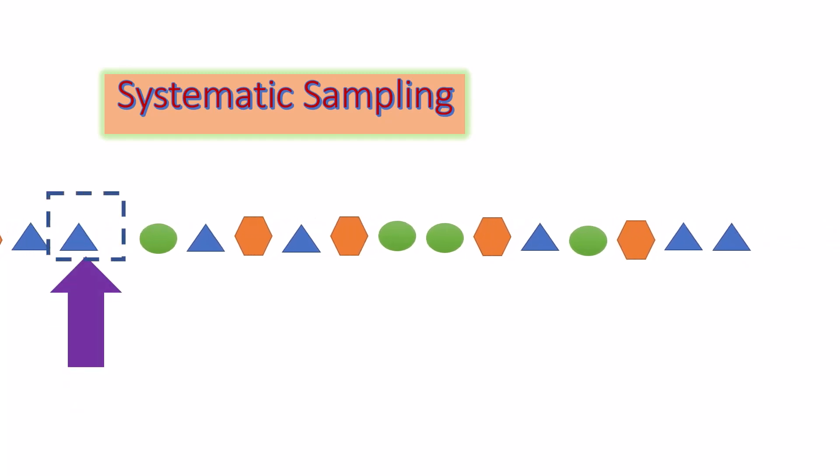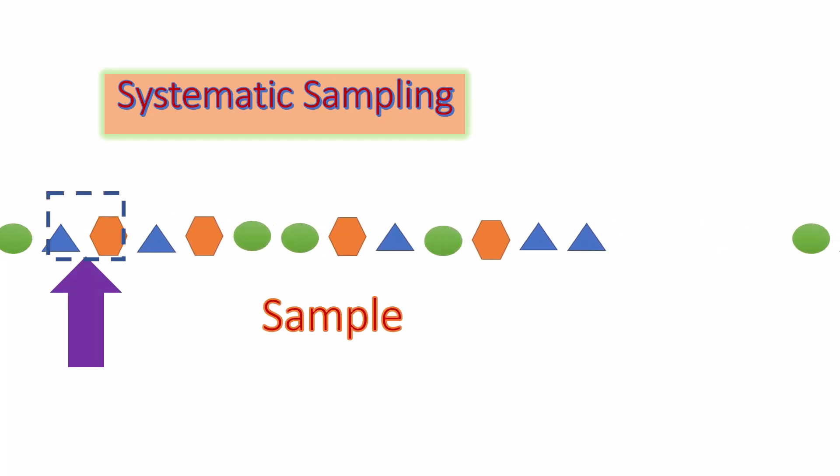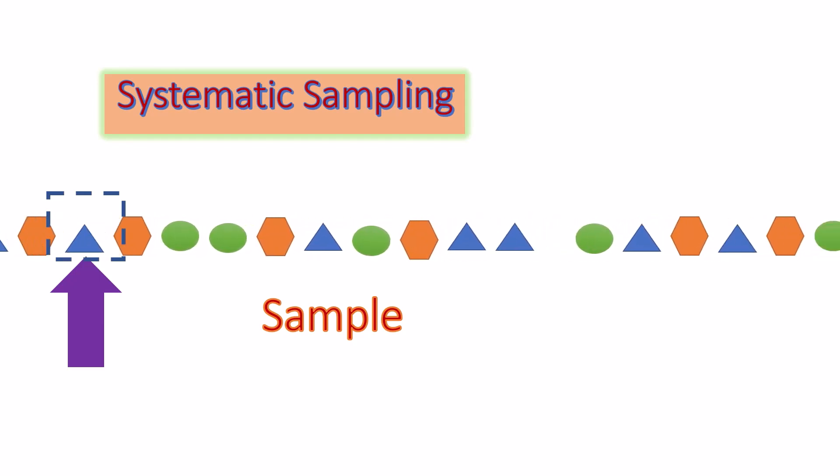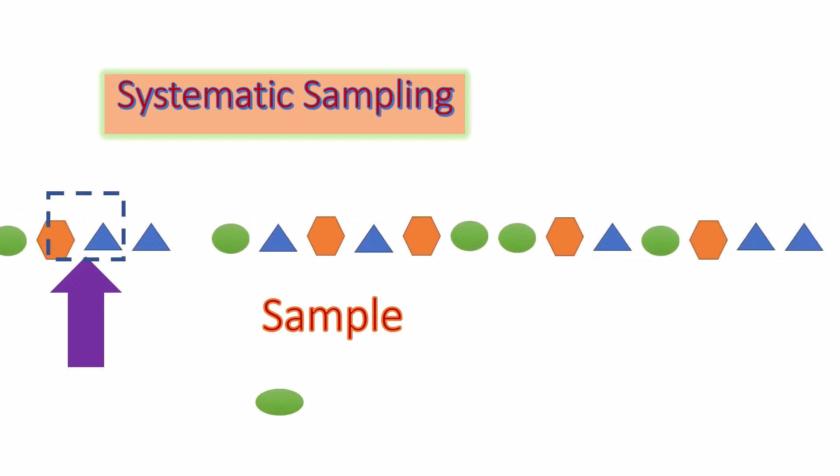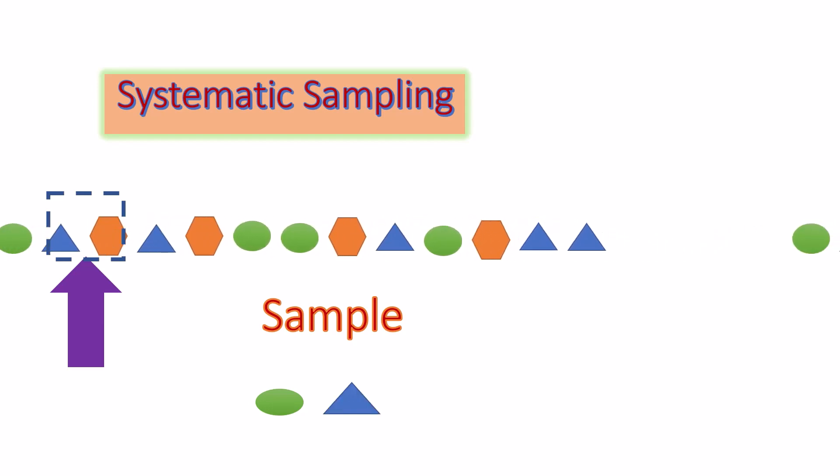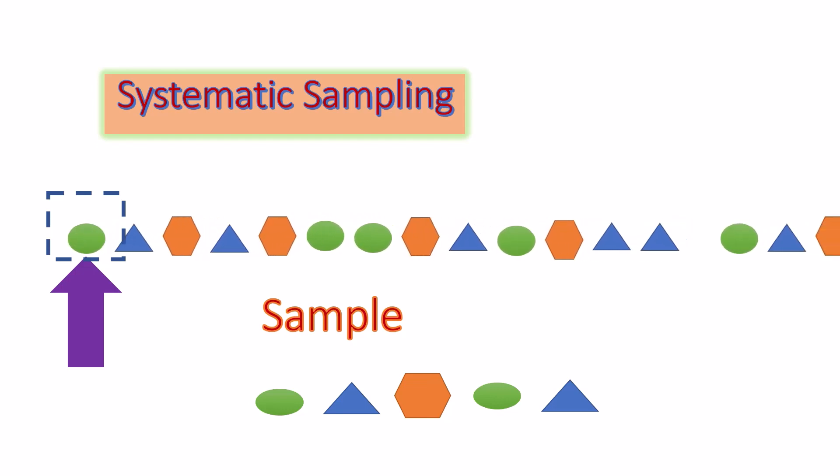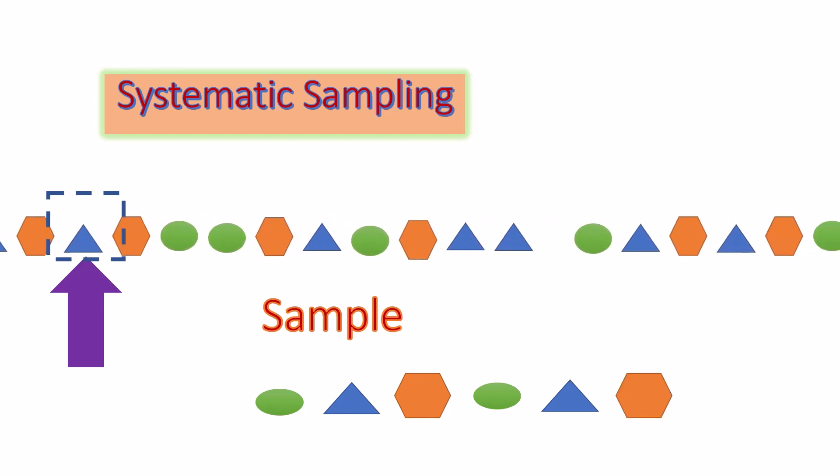Considering our previous example, we have 200 population size and we want to choose 10 people as sample. We will first choose a starting number at random and then take every 20th person to get a sample of 10. First we choose randomly one green, then can be blue, orange, green, blue, orange and so on.